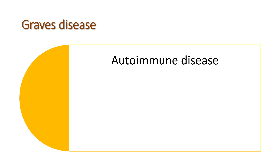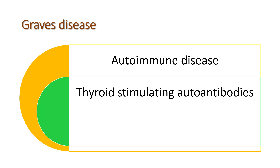In normal people, TSH binds with the TSH receptors and creates thyroid hormone. In Graves disease, thyroid stimulating antibodies are produced. These bind with the TSH receptors and produce more thyroid hormone because the thyroid stimulating autoantibodies have a longer half-life. They act for a longer time compared to TSH, producing more thyroid hormone in spite of low TSH. The TSH level is very low in Graves disease.